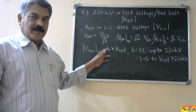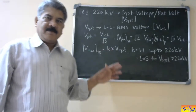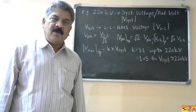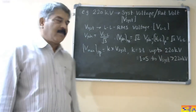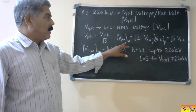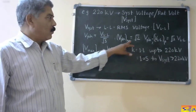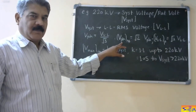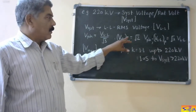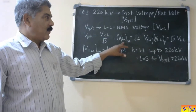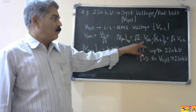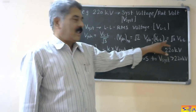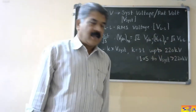This is the RMS value. In AC, the voltage waveform is sinusoidal, so there is a peak value, also called maximum value. That peak value is root 2 times the voltage. If we want the peak value of the phase voltage, it is root 2 into V_phase. If we want the peak value of the line-to-line voltage, it is root 2 into V_line-to-line.